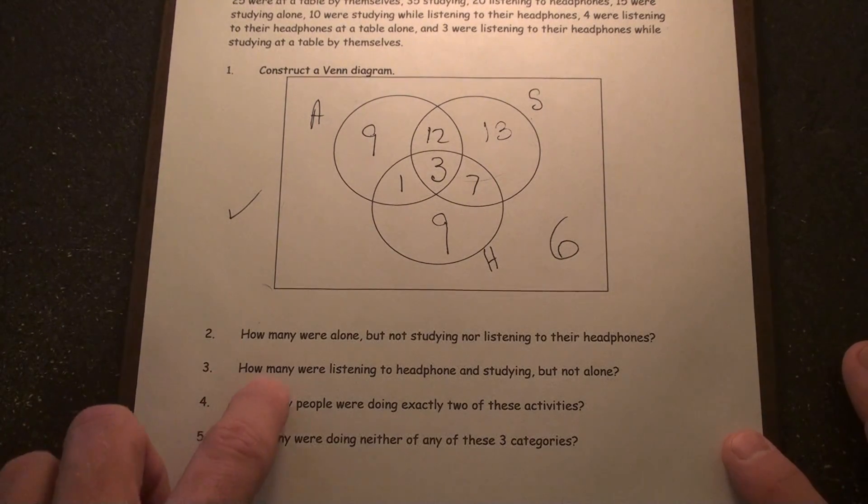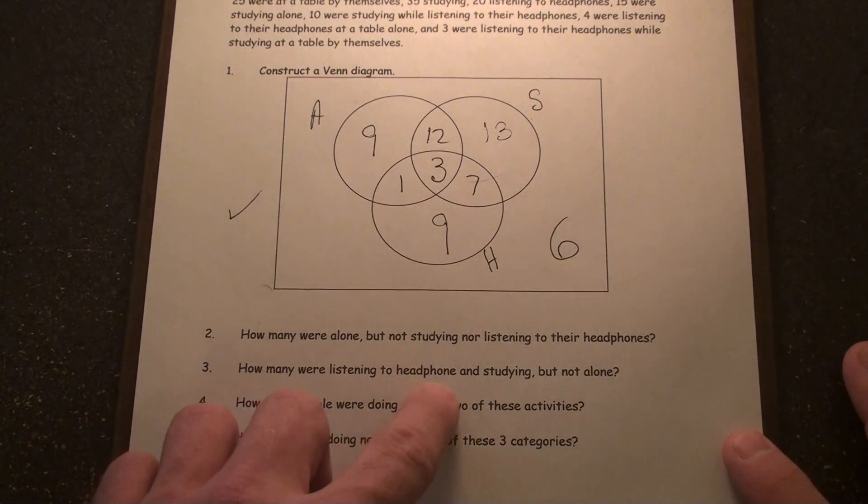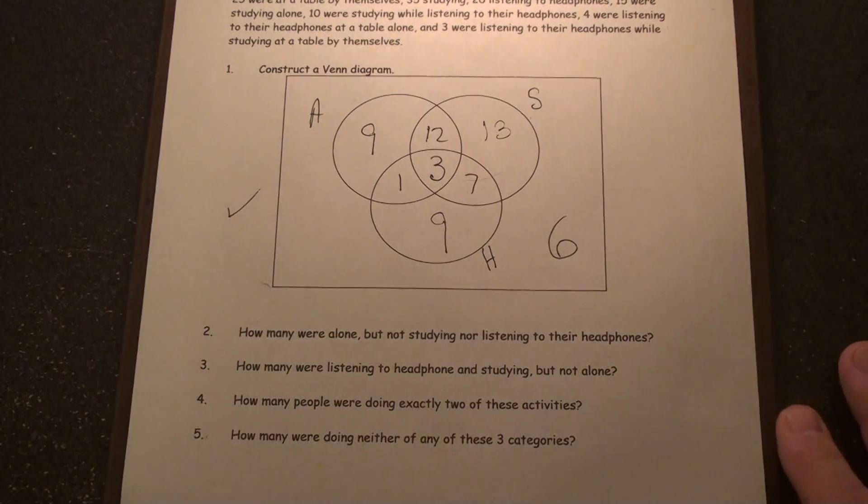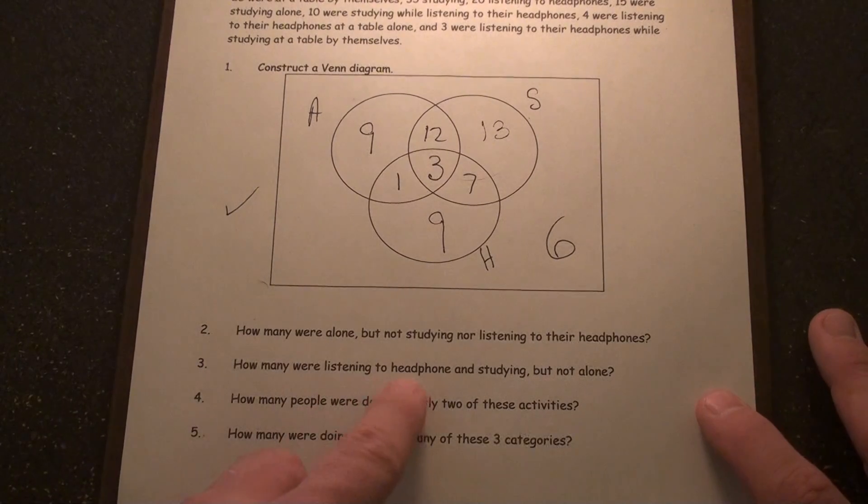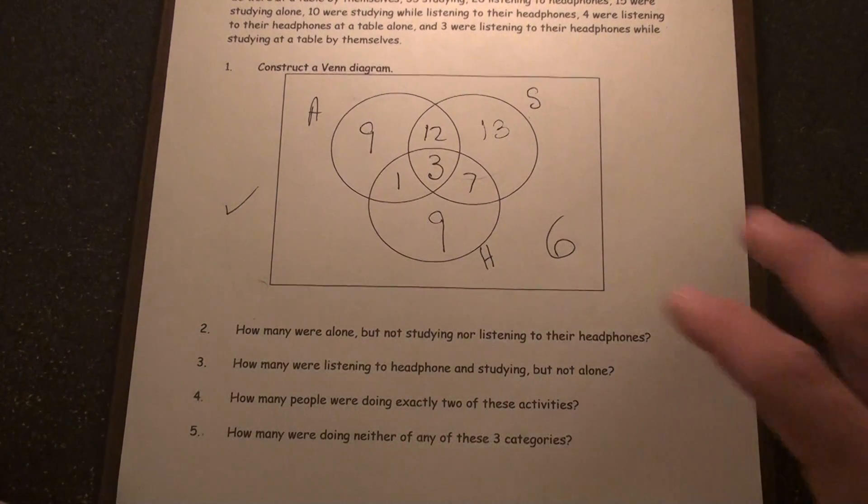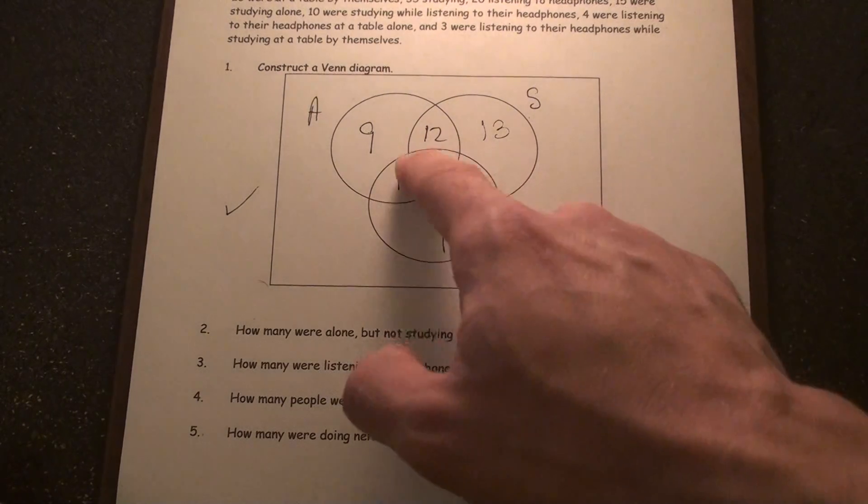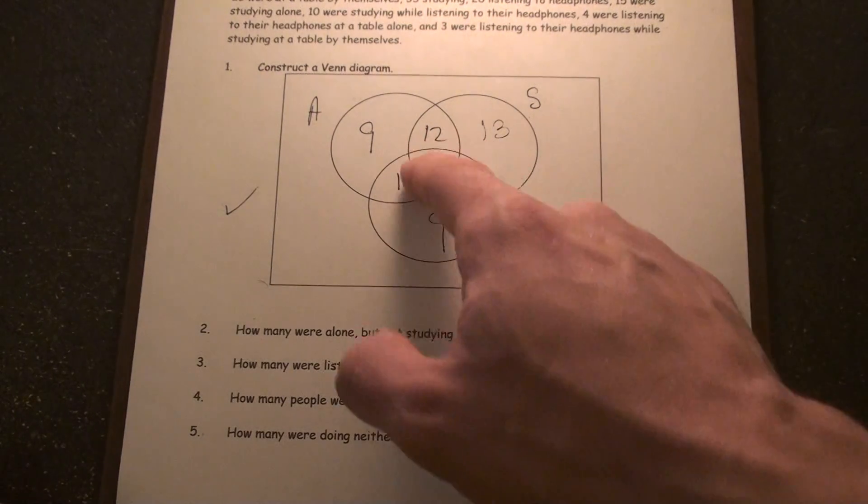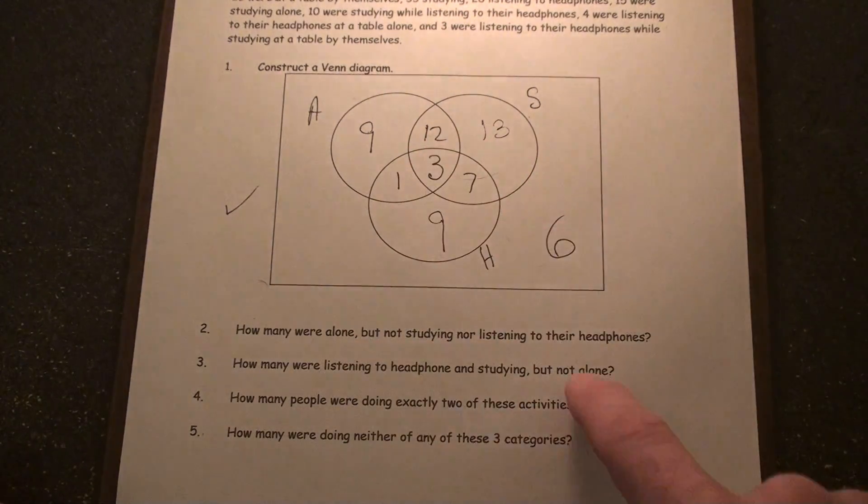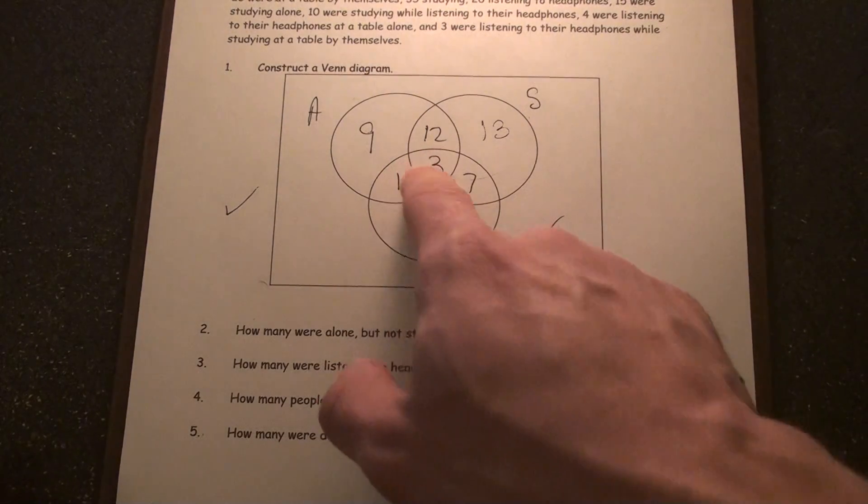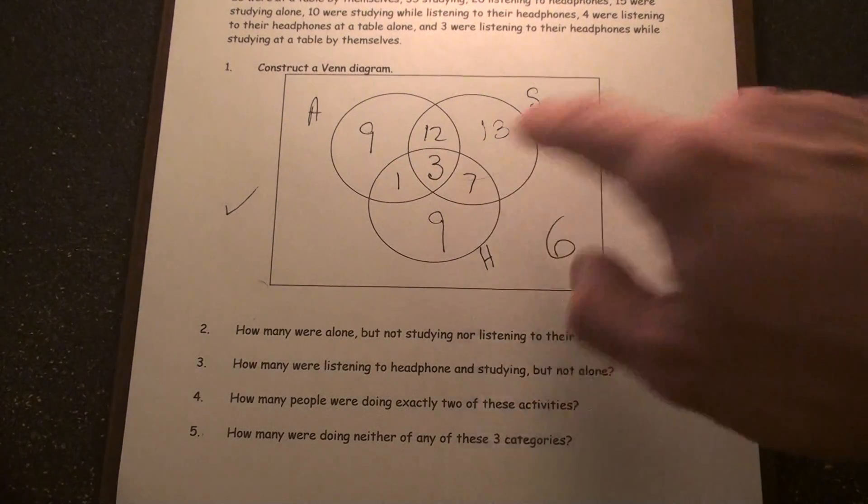Number three: how many were listening to their headphones and studying but not alone? Let's see. Listening to headphones and studying, that would be these ten people here, right? Those ten, that three and seven, but not alone. So not the three, therefore just the seven.